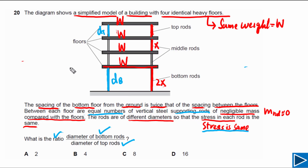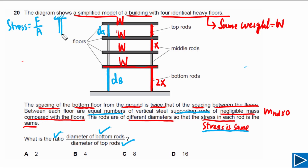First, let's understand what stress is. Stress is simply equal to force over cross-sectional area. For example, if we have a rod with cross-sectional area A and we apply force F on it, then stress is equal to F over A.